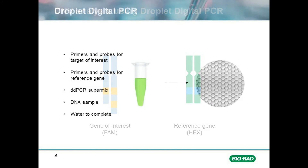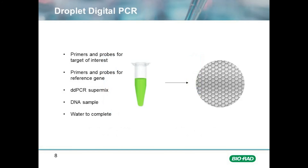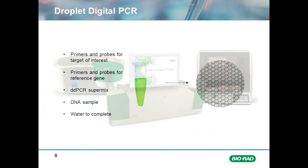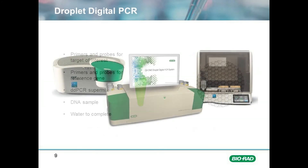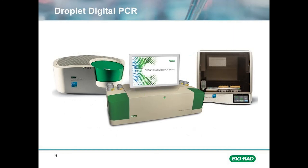To prepare a ddPCR reaction, you would combine the primers and probes for each target, the ddPCR supermix, the DNA sample, and water. You would then process the sample in your favorite ddPCR system.